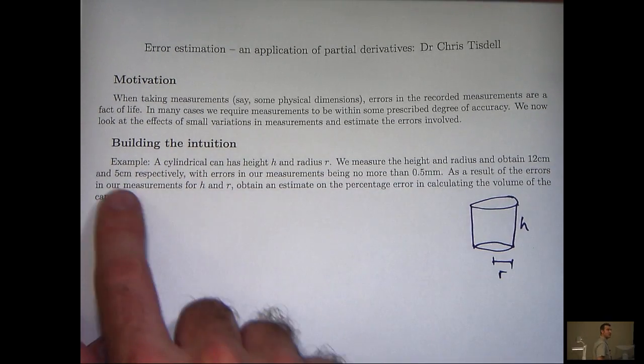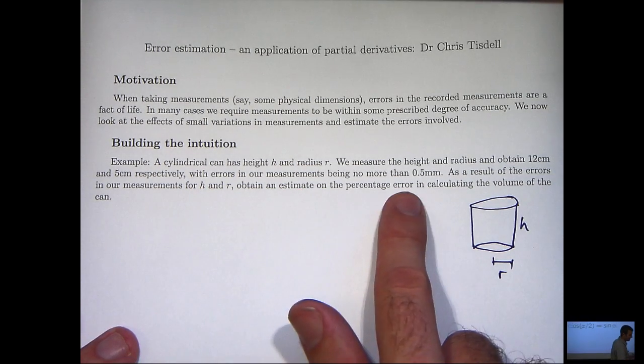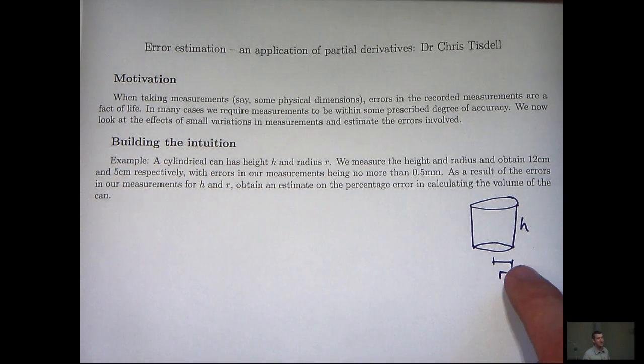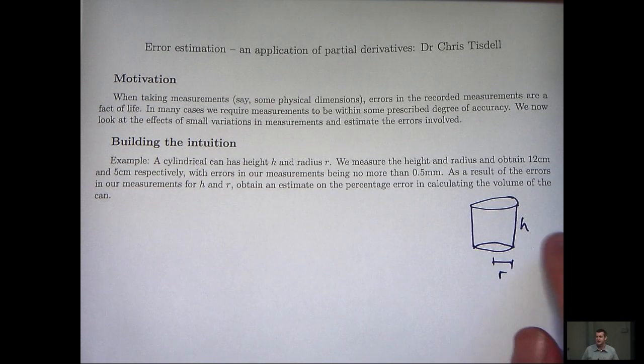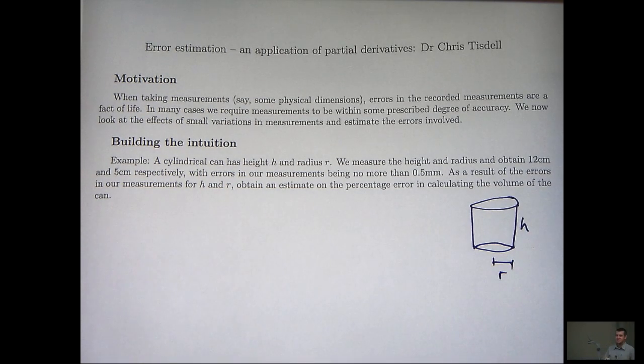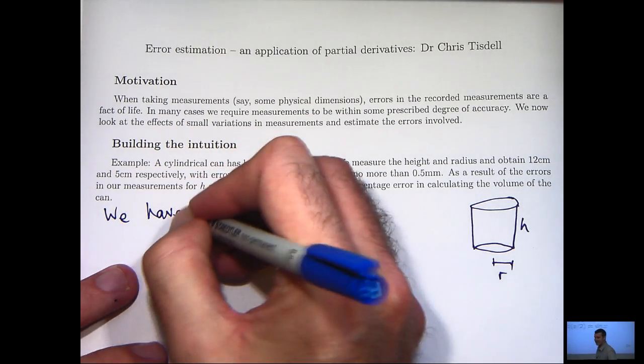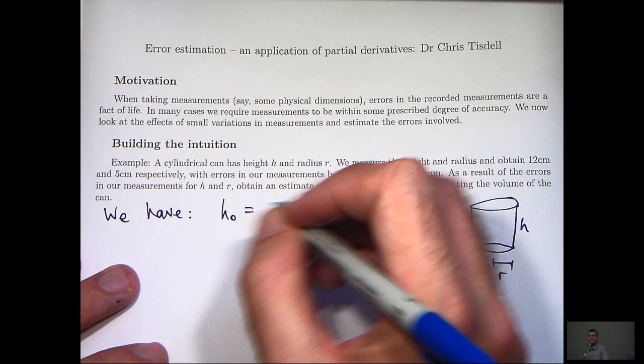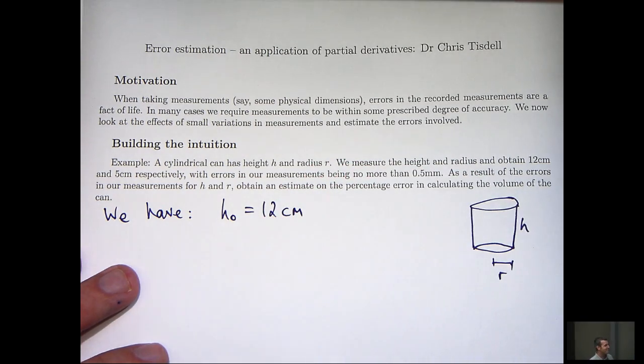As a result of the errors in our measurements, obtain an estimate on the percentage error in calculating the volume of the can. So I'm going to let R be the true radius of the base and I'm going to let H be the actual height of the can. Let's see how we can solve this problem. Well, what do we know?